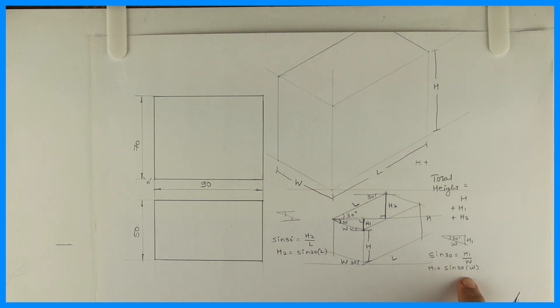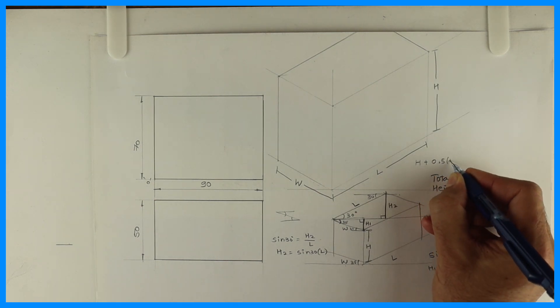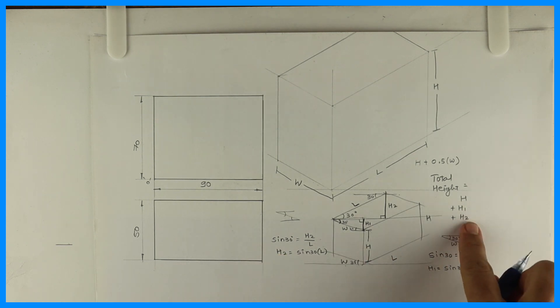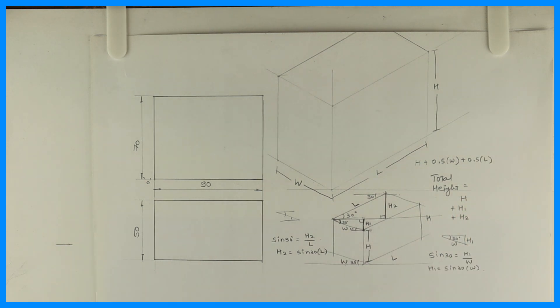So our height would be H plus H1. How much is H1? Sine 30 into W. Sine 30 is how much? 0.5 plus H2 which is 0.5 L. So this is our total height.